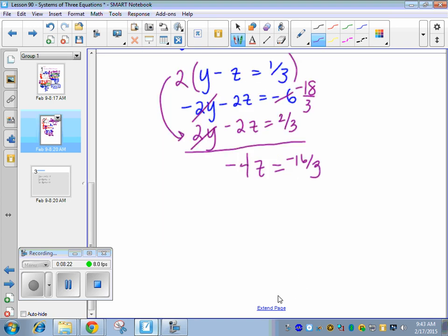Good old fractions. I hate fractions. Times by negative 1 fourth here. Reciprocal. So z. Right here we can cross cancel 4 and 16. And then a negative times a negative is a positive 4 thirds.